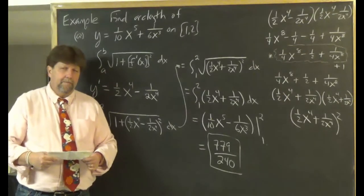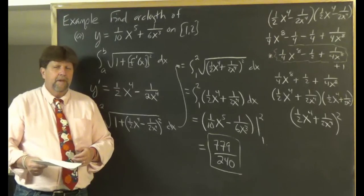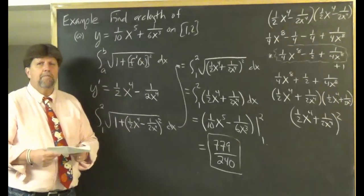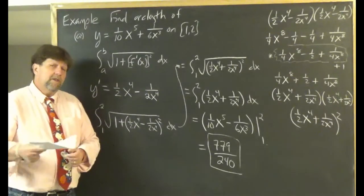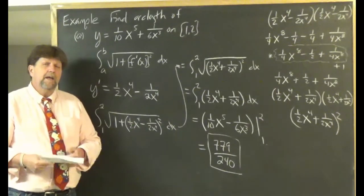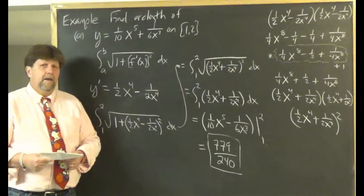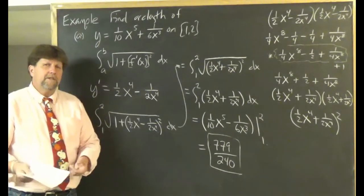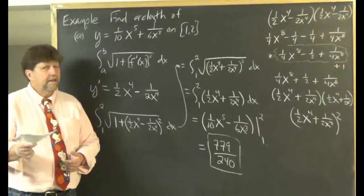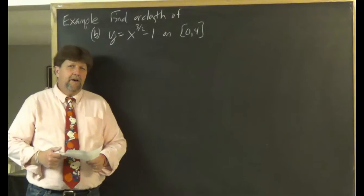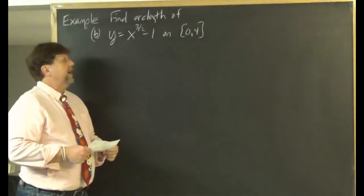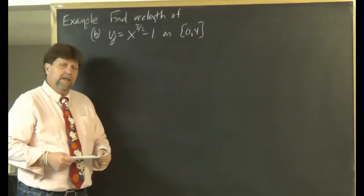That was Part A. Now for Part B: find the arc length of y = x^(3/2) − 1 on [0, 4]. Pause the video, try it yourself, then restart and I'll work through it.